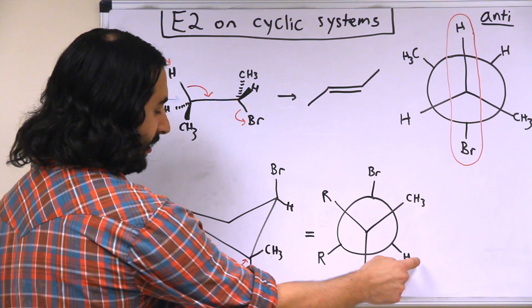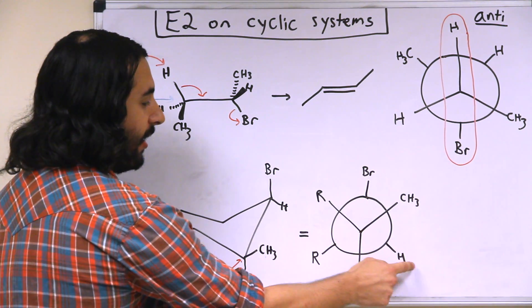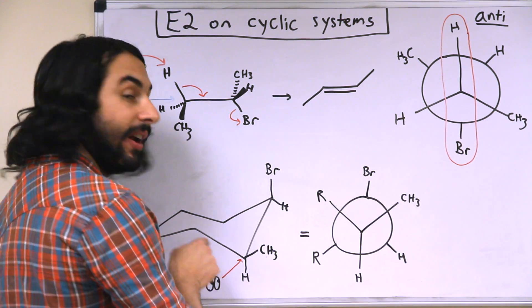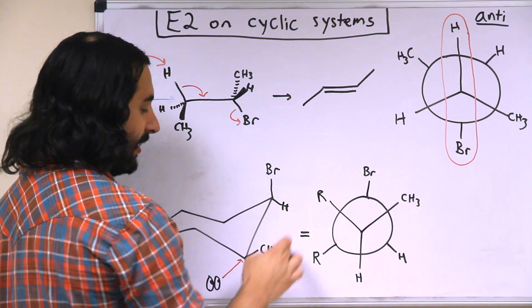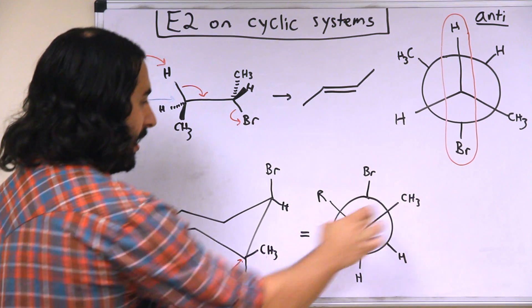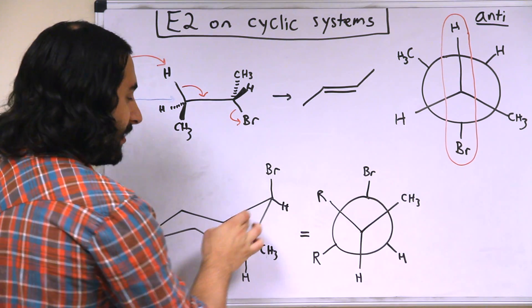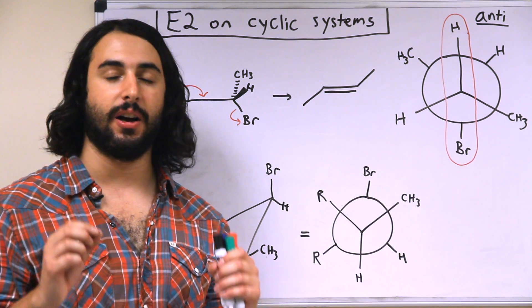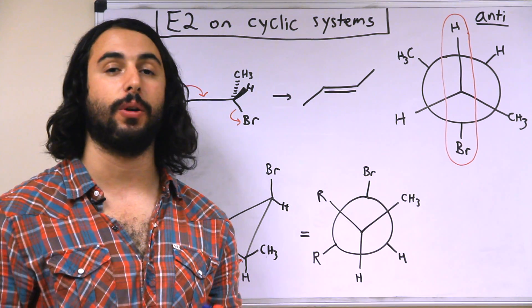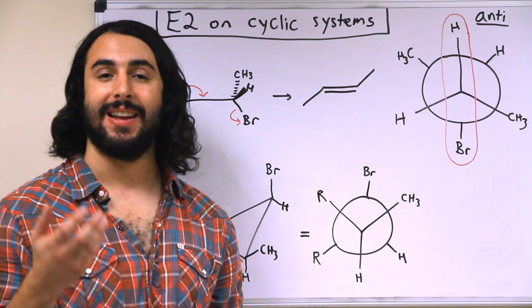So here's the equatorial hydrogen back here, that is anti to the rest of the ring on the front part. Here is the methyl group, that's in the equatorial position on this carbon, that is going to be anti to the rest of the ring in the back. So there is no way for a proton in the equatorial position to participate in elimination.